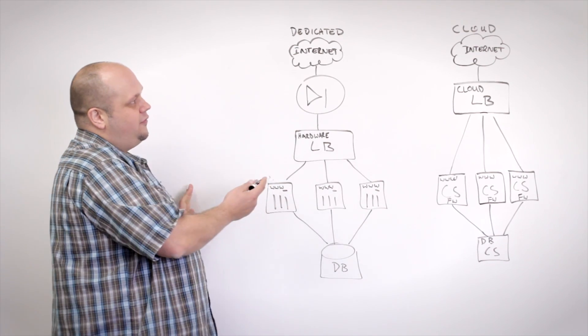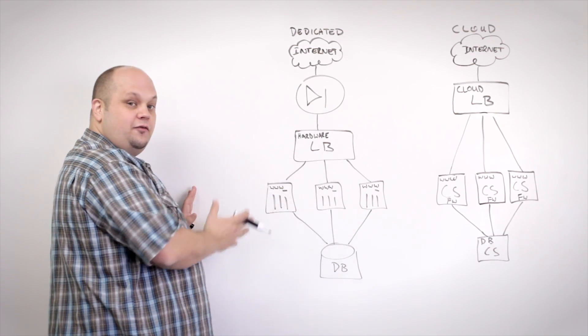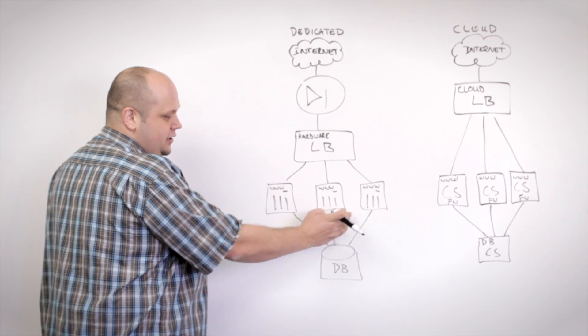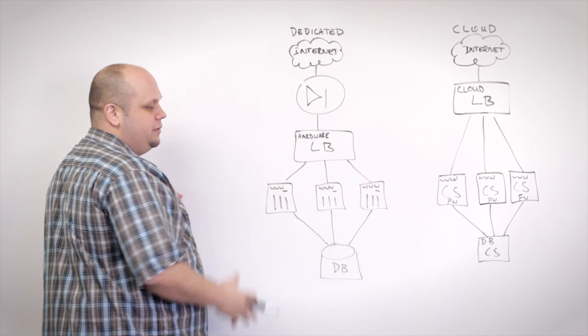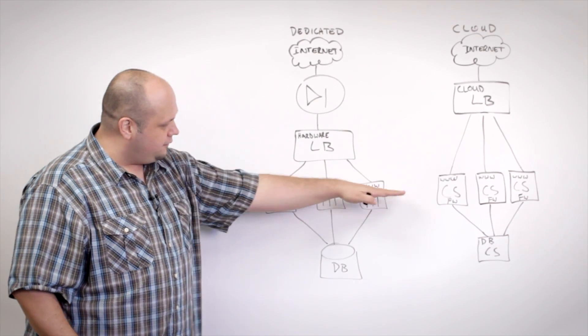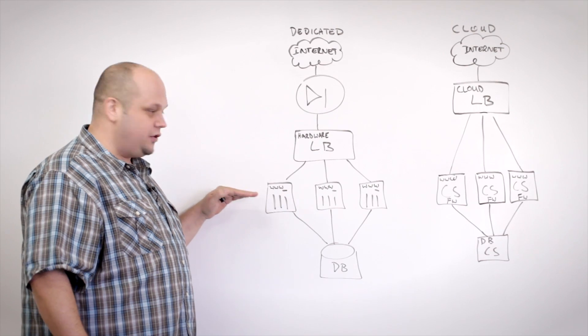So in a dedicated environment that would require a number of different steps here. You see they already have redundant web heads and the load balancer handles distributing load between these web heads. So you already have high availability at this tier of your infrastructure.